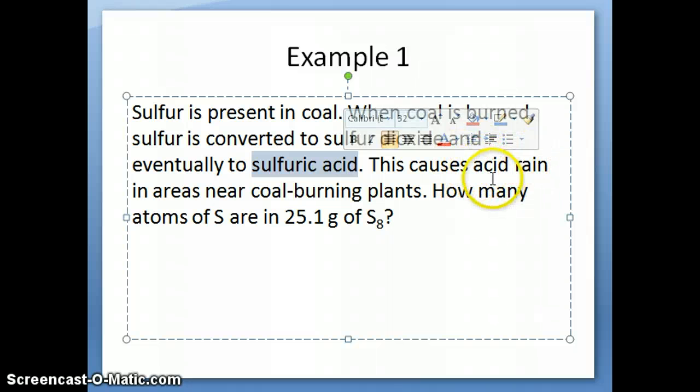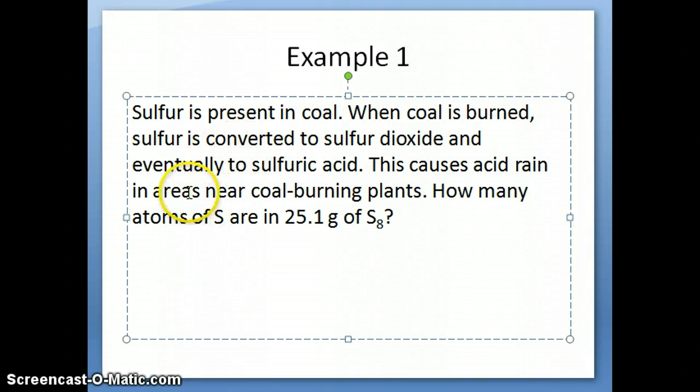In areas where there's a relatively high concentration of this, when it rains, it causes what we call acid rains. When the rain falls on certain infrastructure like metals, it's going to react with those metals and cause corrosion because it's acidic. This is definitely an important environmental issue you want to think about if you're interested in those topics.